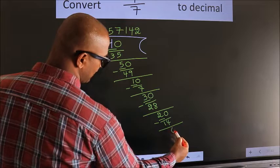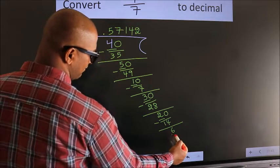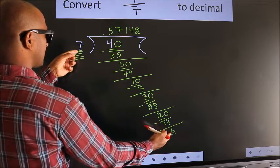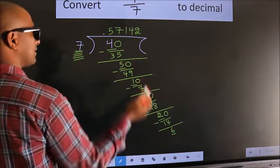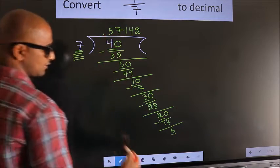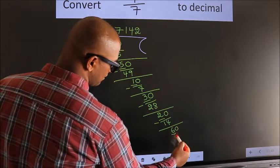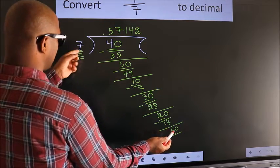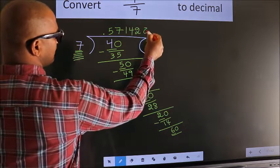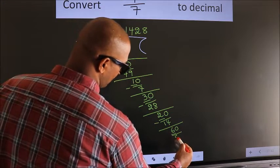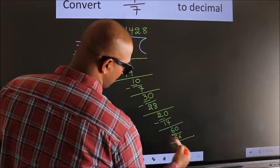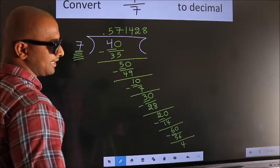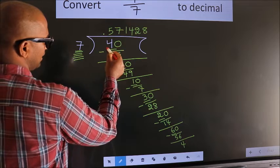Now we subtract and get 6. Here we have 6, and we already have the decimal, so we can directly take 0, making it 60. A number close to 60 in the 7 times table is 7 eights, which is 56. Now we subtract and get 4.